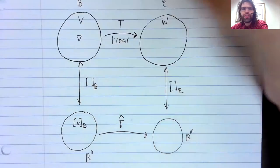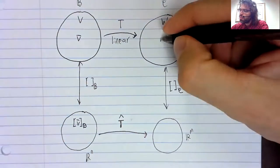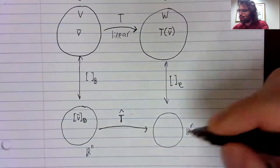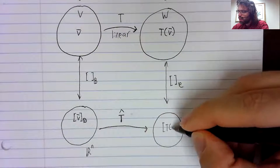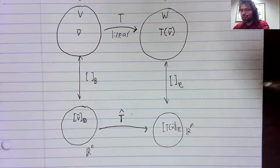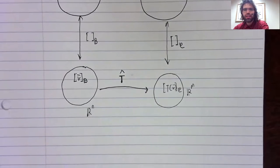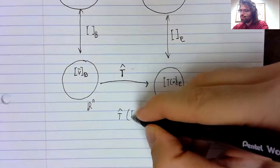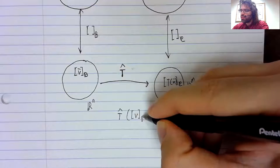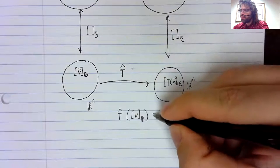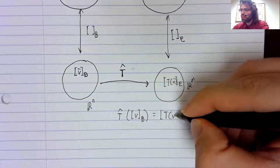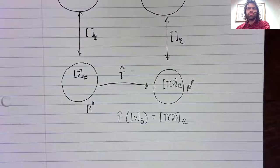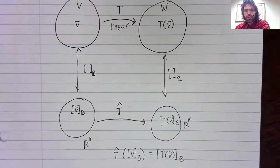we can look at V up here. We can look at T of V over here, and we can look at the coordinate vector of T of V down here. And we've defined T hat of the coordinate vector of V to be the coordinate vector of T of V with respect to C.